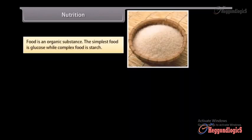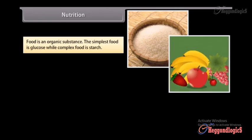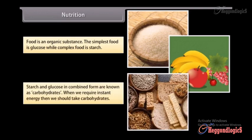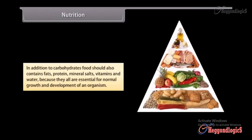Food is an organic substance. The simplest food is glucose while complex food is starch. Starch and glucose in combined form are known as carbohydrates. When we require instant energy, then we should take carbohydrates. In addition to carbohydrates, food should also contain fats, protein, mineral salts, vitamins, and water because they all are essential for normal growth and development of an organism.